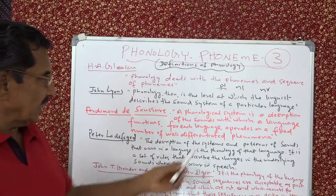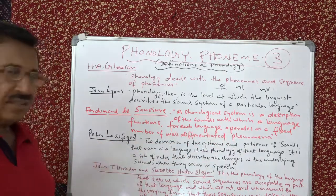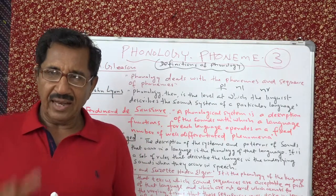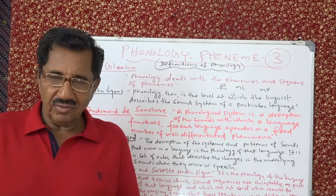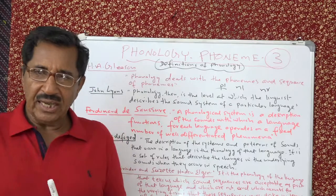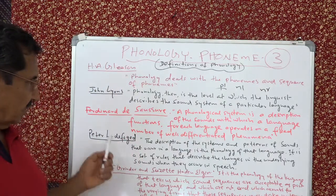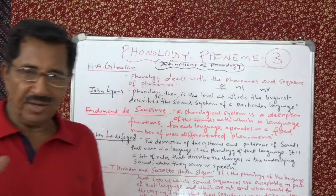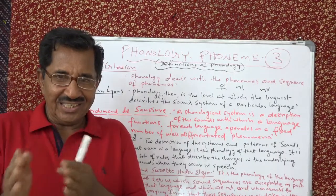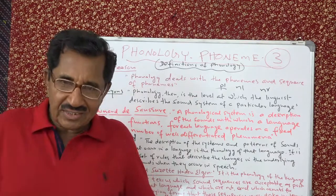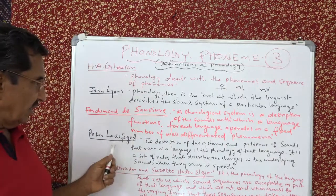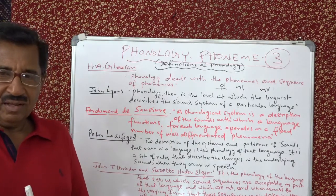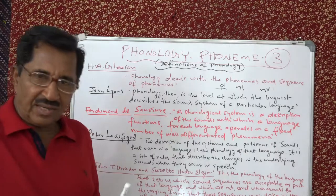Saussure says: a phonological system is a description of the sounds with which a language functions. The phonological system of English has 44 sounds — 12 pure vowels, 8 diphthongs, and 24 consonants. Each language operates on a fixed number of well-differentiated phonemes. They cannot add or delete from that fixed number.